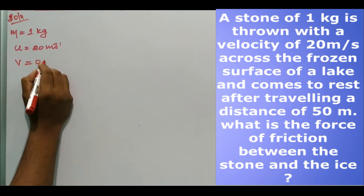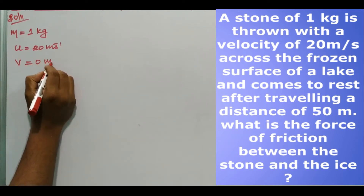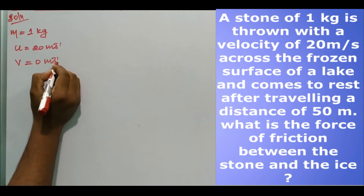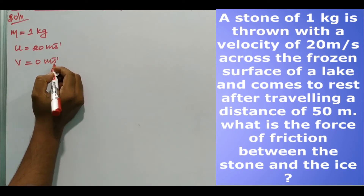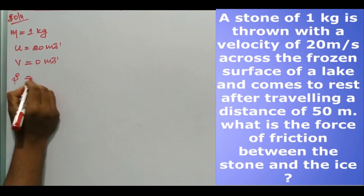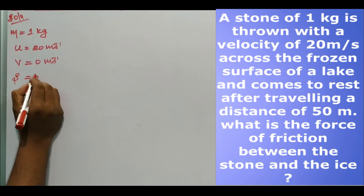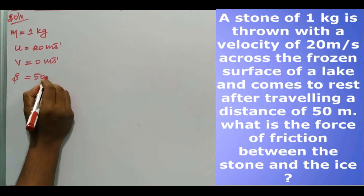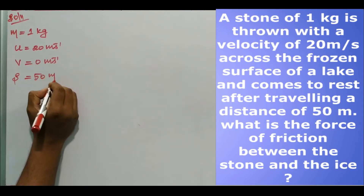Final velocity is zero, because the stone is going to stop. Distance covered by the stone is 50 meter.